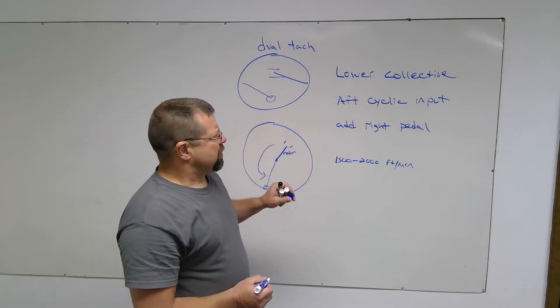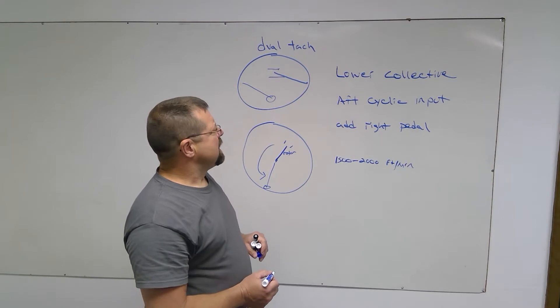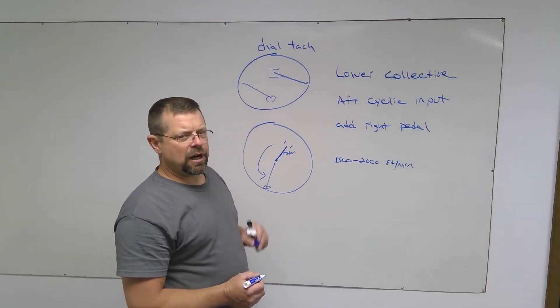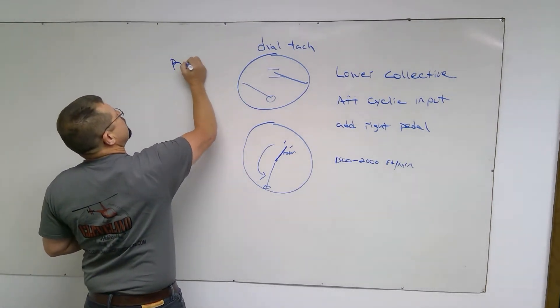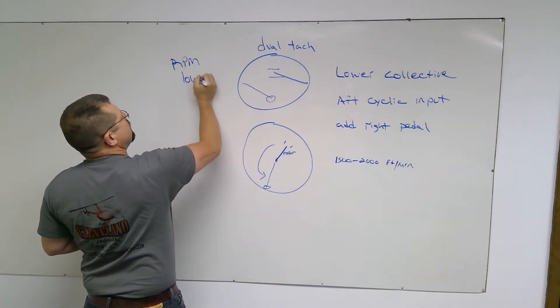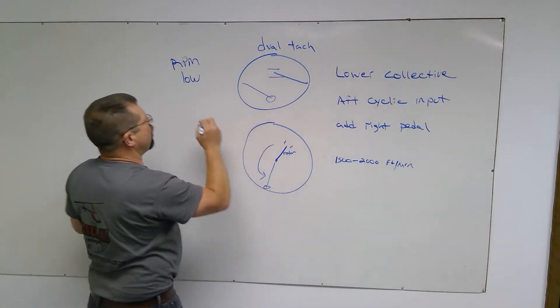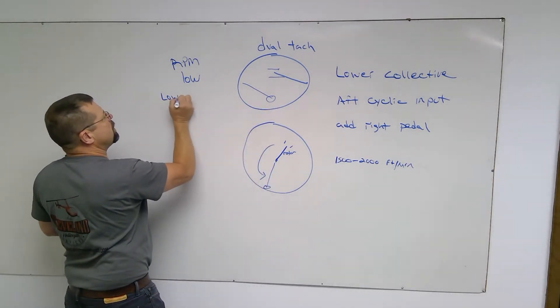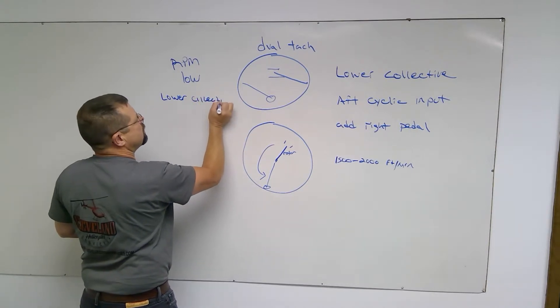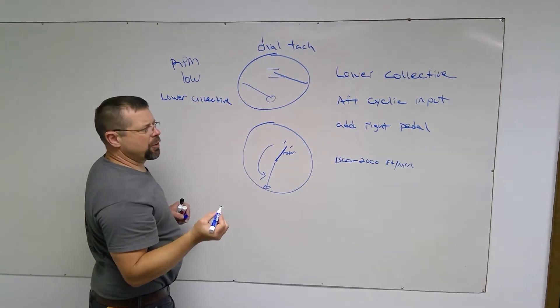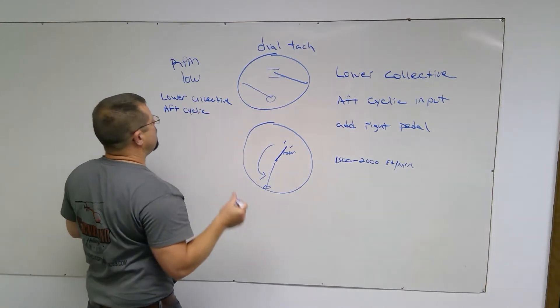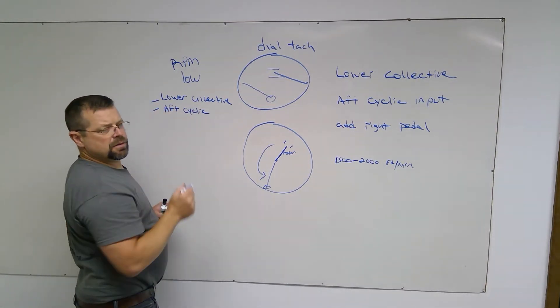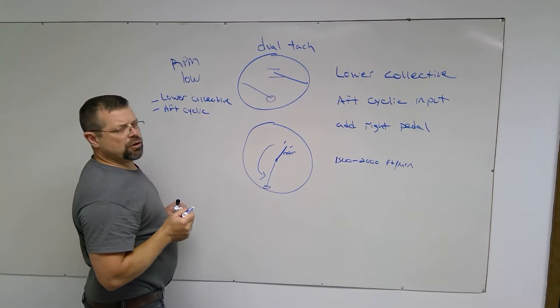After the initial entry, the pilot's looking for a spot. Now it's important to control that RPM. If the RPM goes low, the pilot can lower the collective more. If the collective is all the way down, he could come aft on the cyclic. Either one of these will increase RPM.